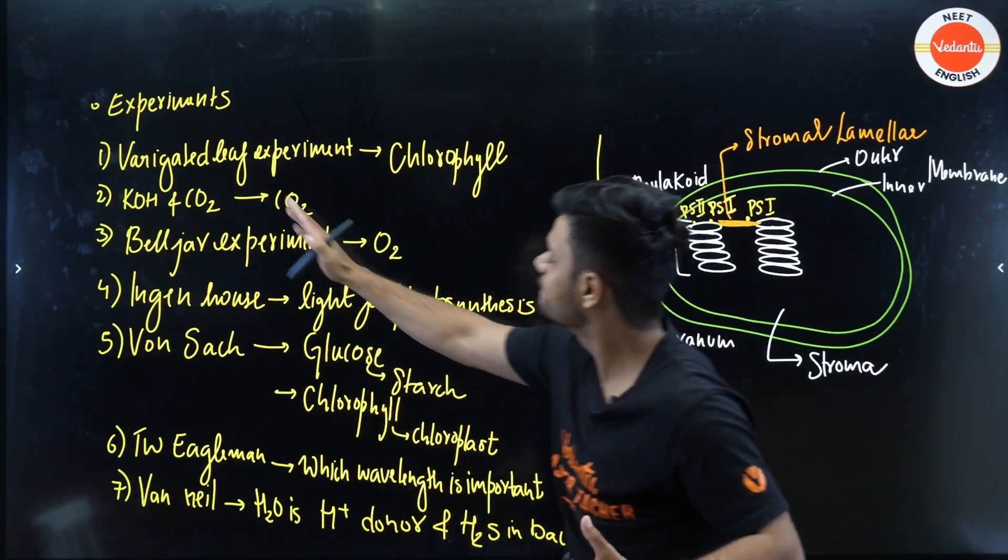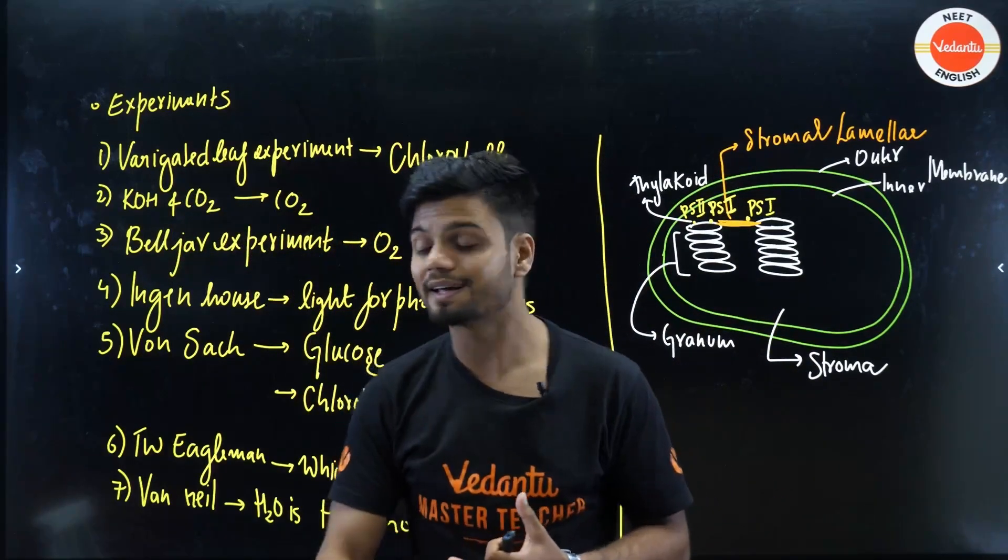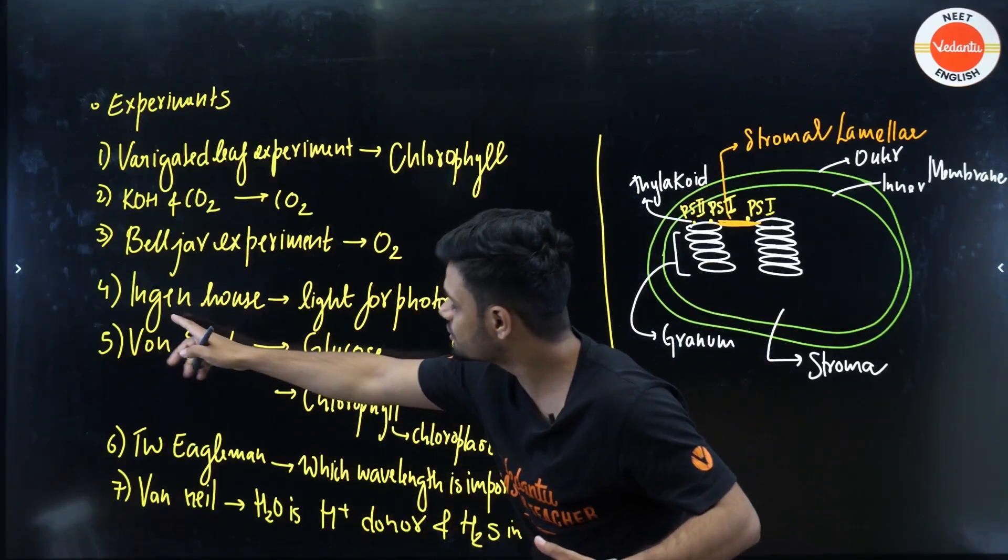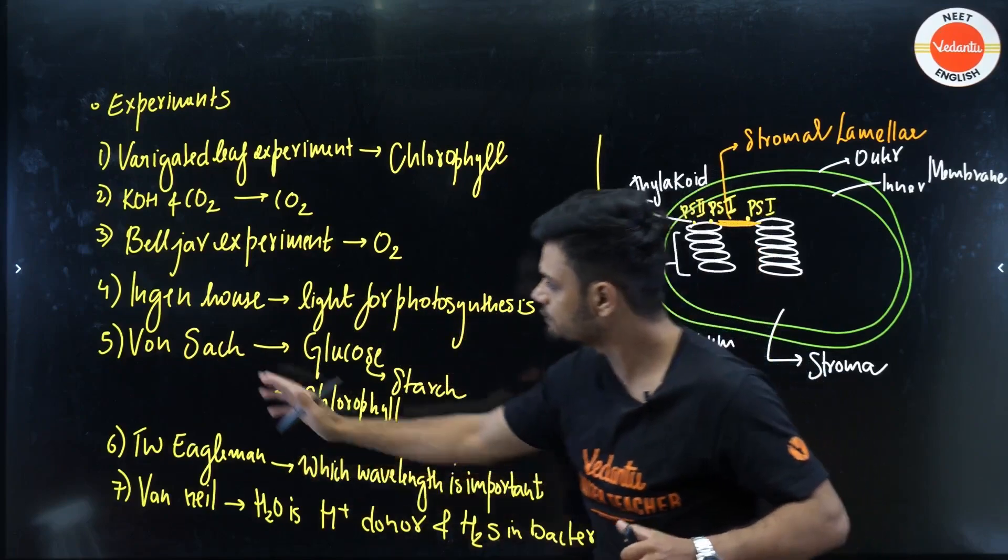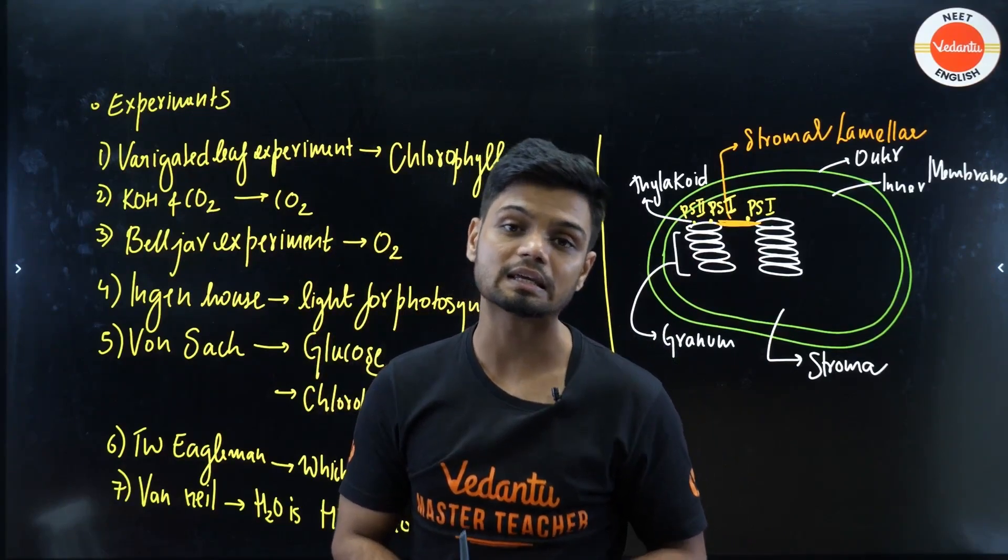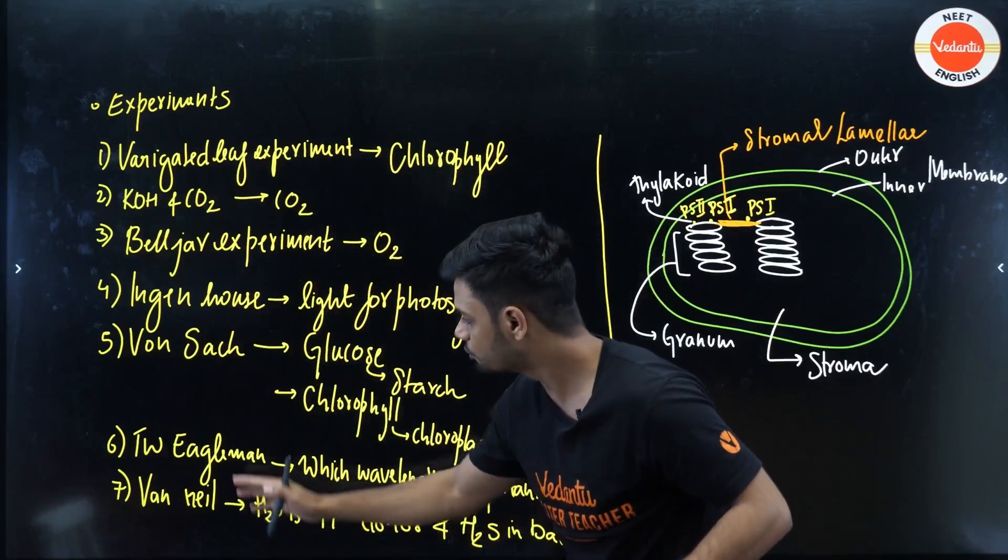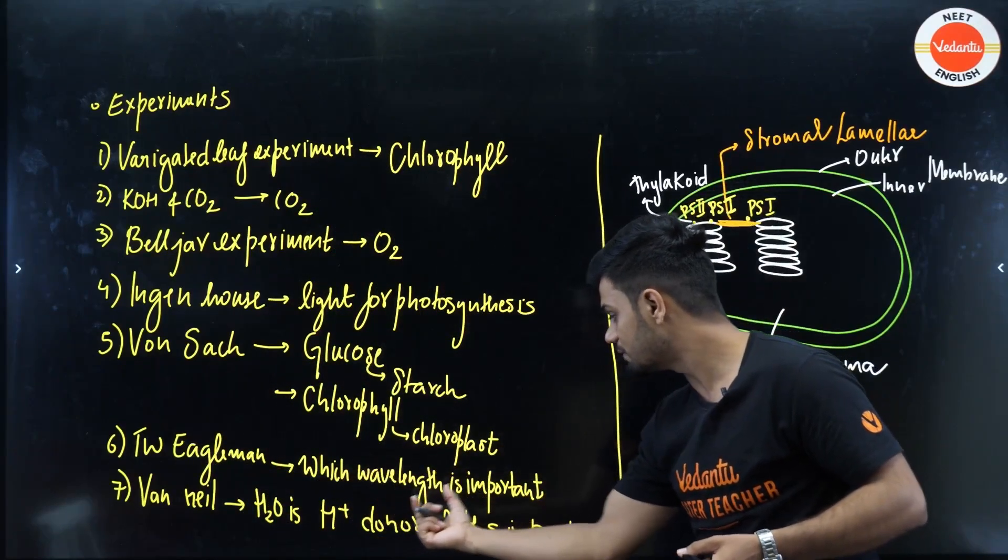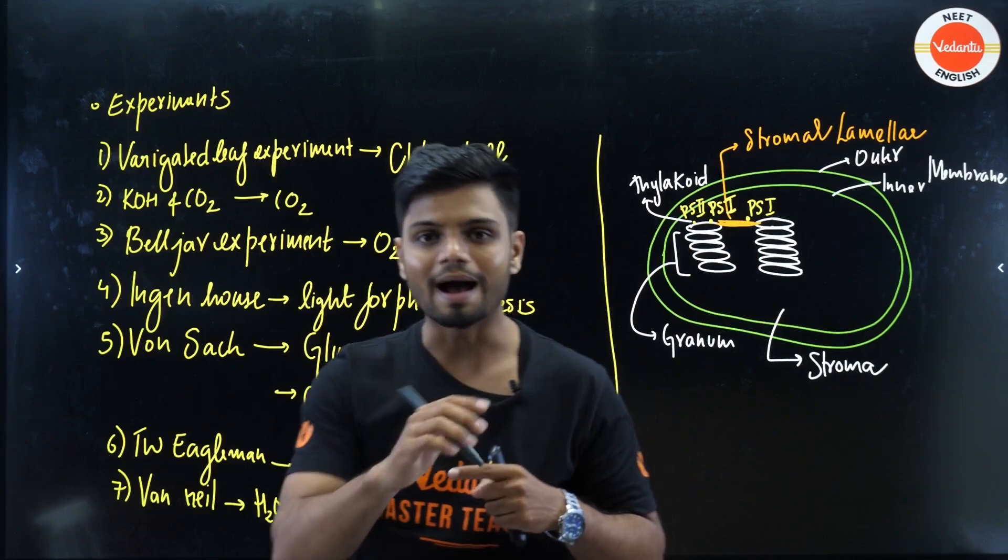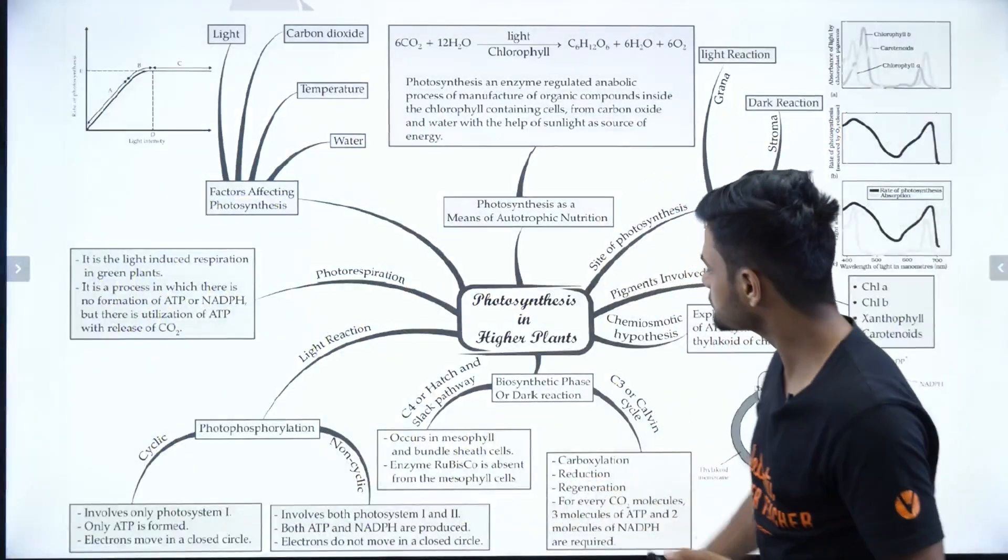Other than that, we have certain experiments such as the variegated leaf experiment, which shows the presence of chlorophyll. We have KOH experiment, which shows the importance of carbon dioxide. Belger experiment by Joseph Priestley, which shows oxygen is involved. Then we have Ingenhousz, that light for photosynthesis is important. Then we have Wanscher experiment, which shows that glucose is getting converted to starch. And this reaction is taking place inside the chloroplast, where chlorophyll is involved. Then we have T.W. Engelmann experiment, which shows which wavelength is important. Then we have Van Niel experiment, which shows that water is the hydrogen donor. And in the case of certain purple and green bacteria, H2S is the donor.